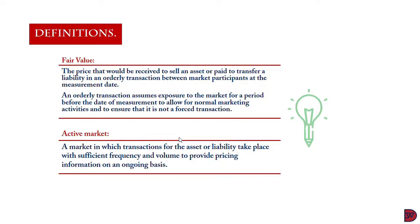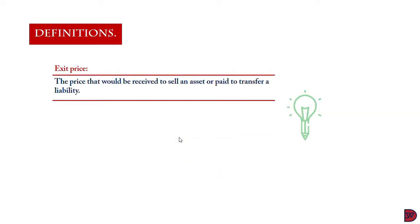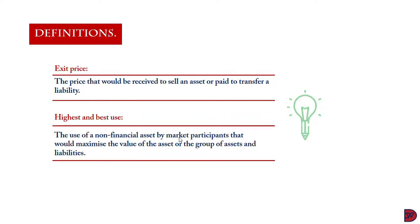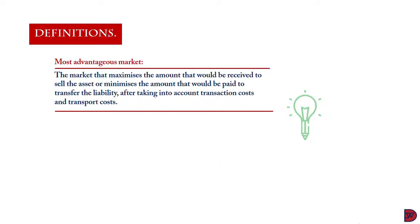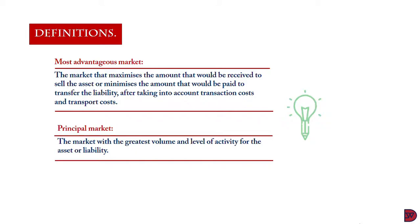Active market: a market in which transactions for the asset or liability take place with sufficient frequency and volume to provide pricing information on an ongoing basis. Exit price: the price that will be received to sell an asset or paid to transfer a liability. Highest and best use: the use of a non-financial asset by a market participant that would maximize the value of the asset or a group of assets and liabilities within which it will be used. Most advantageous market: the market that maximizes the amount received to sell an asset or minimizes the amount paid to transfer a liability after taking into consideration transaction costs and transport costs. Principal market: the market with the greatest volume and level of activity or frequency for an asset or liability to determine its fair value.